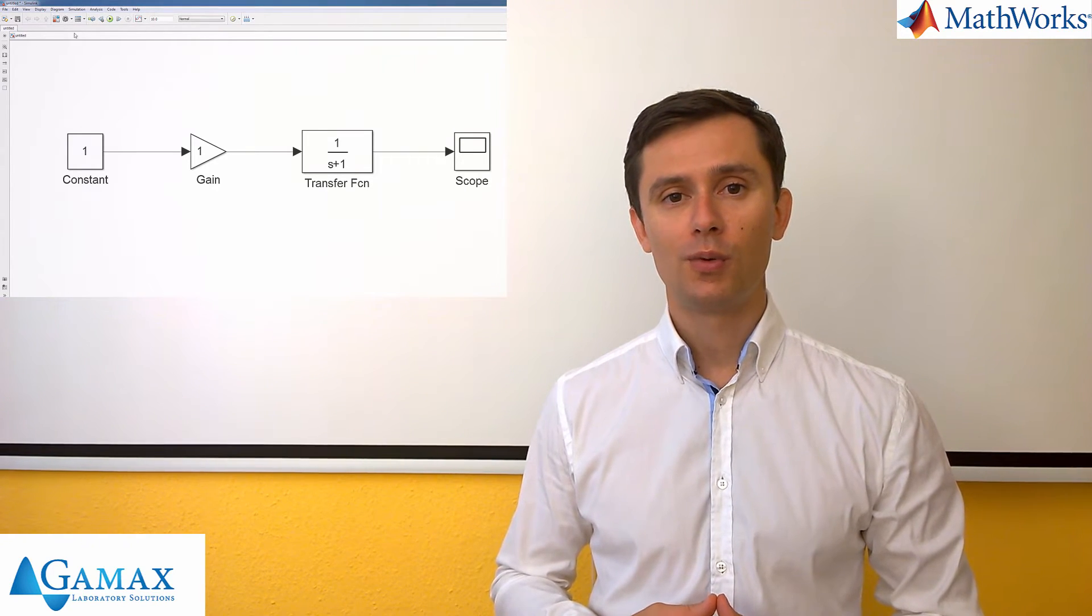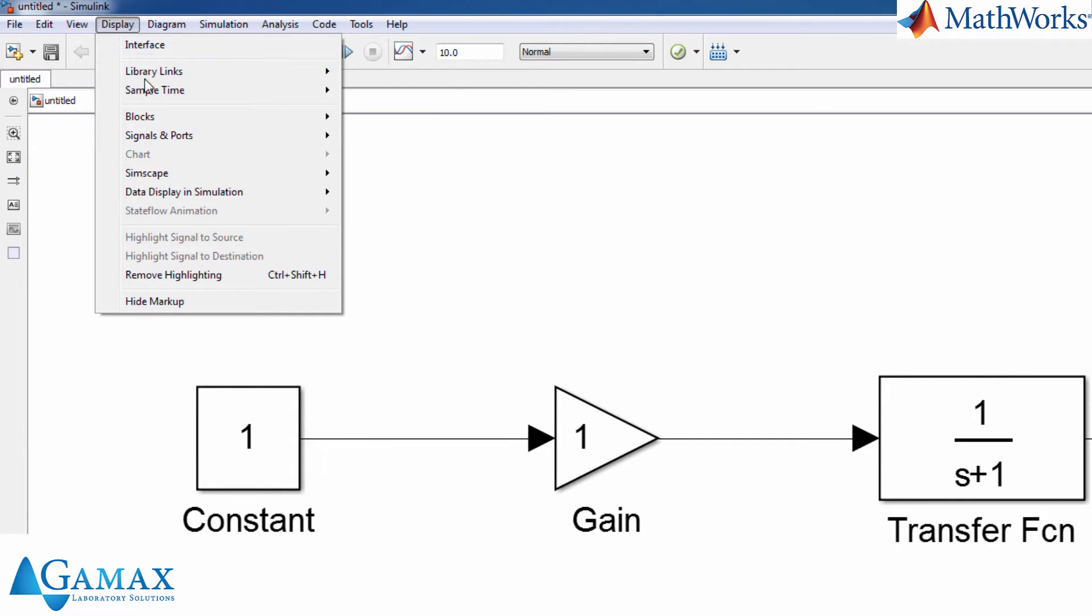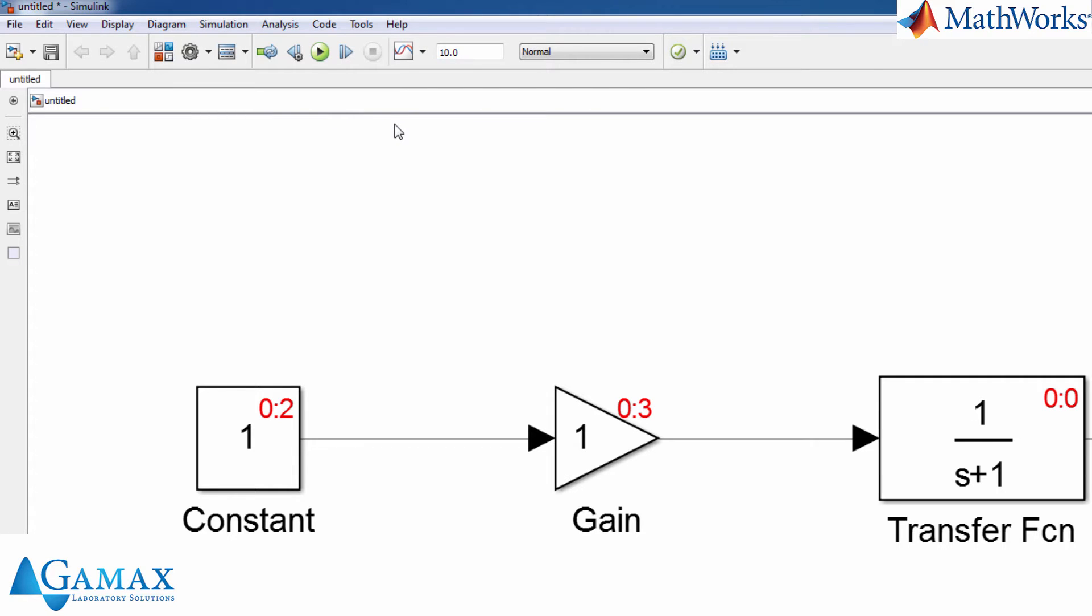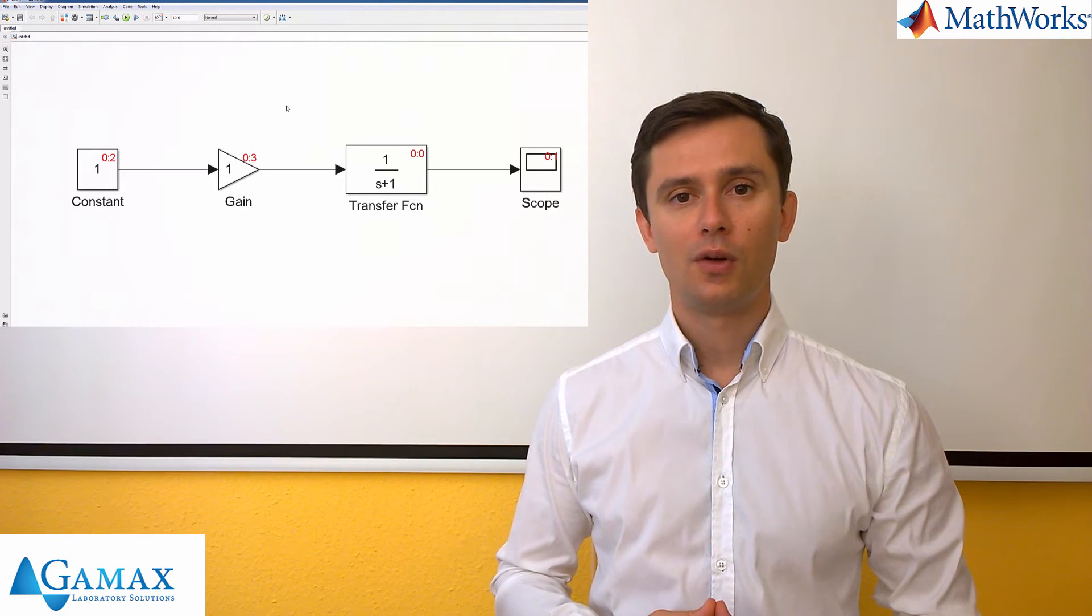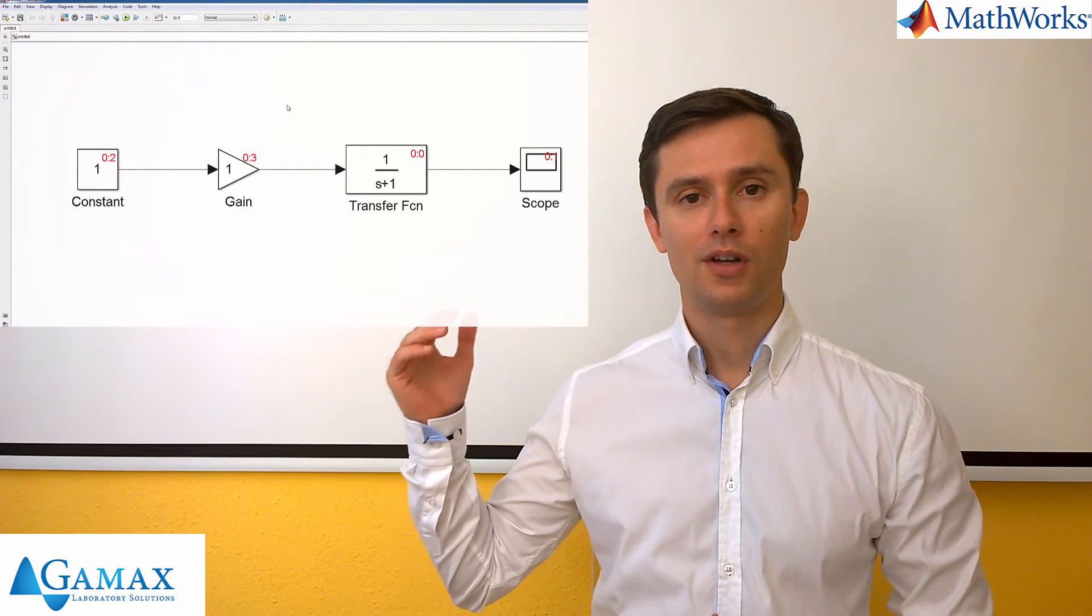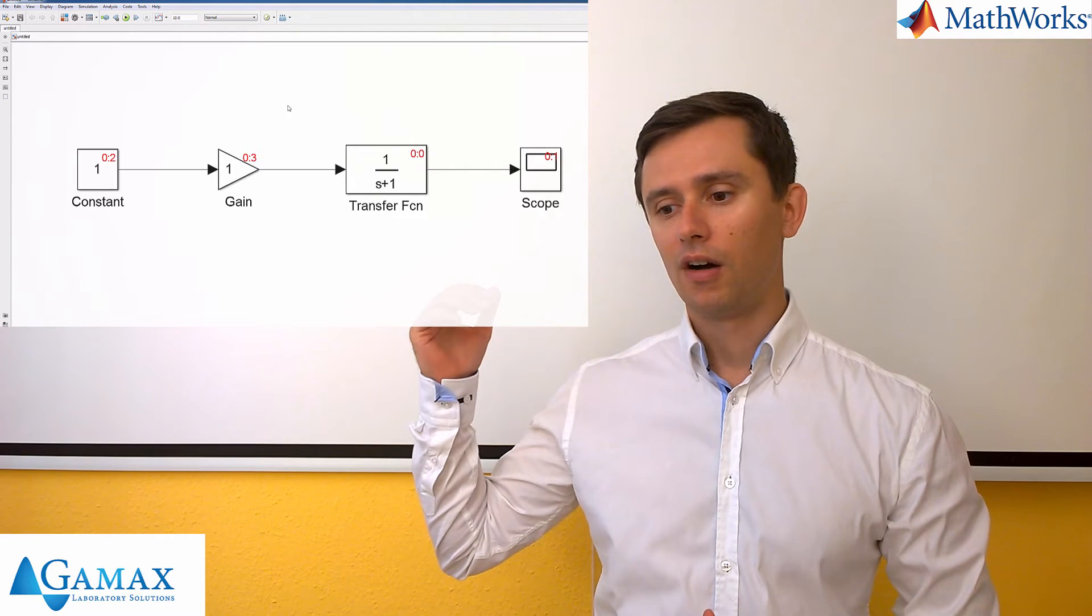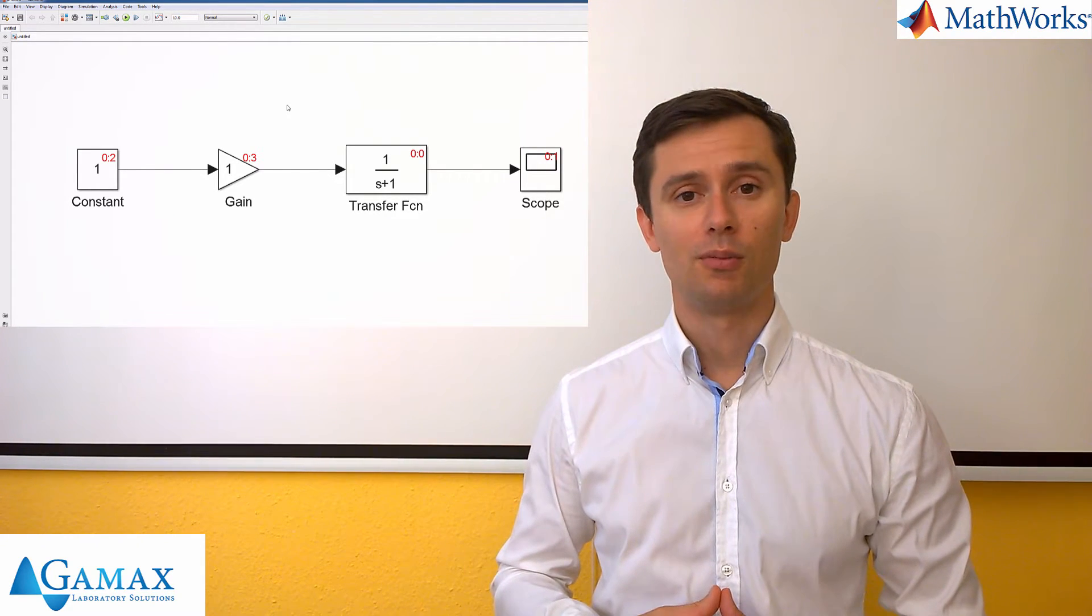If we want to know that, then we need to go to display, blocks, sort the execution order. And now we can realize what is the execution order of the Simulink blocks. So in this case, the transfer function will be the first block to be executed, after that the scope block, after that the constant block, and the gain block will be the last to be executed.